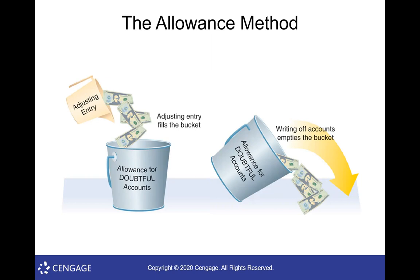Think of it like filling a bucket — the allowance for doubtful accounts. At the end of the year we do the adjusting entry, filling the bucket and taking the expense. Then throughout the next year we write off any actual customers who can't pay, drawing from that bucket. At year-end we reevaluate and replenish it. In a perfect world your estimate would be exact and the bucket would empty to zero, but it's an estimate, so some years you'll have more write-offs, some years fewer.